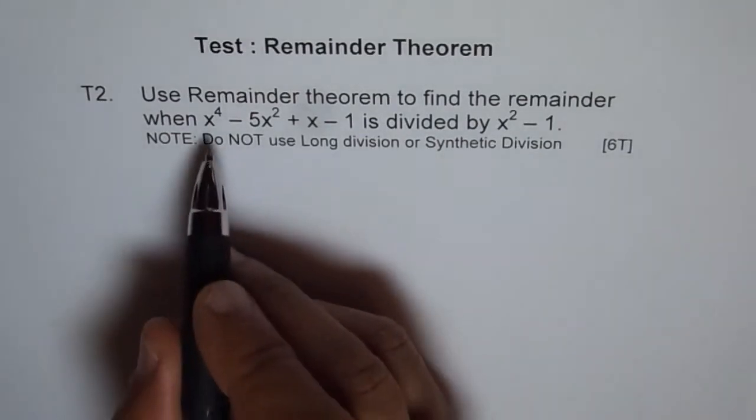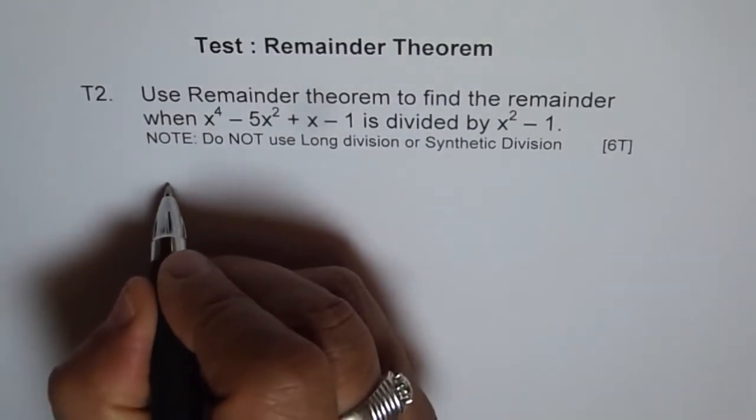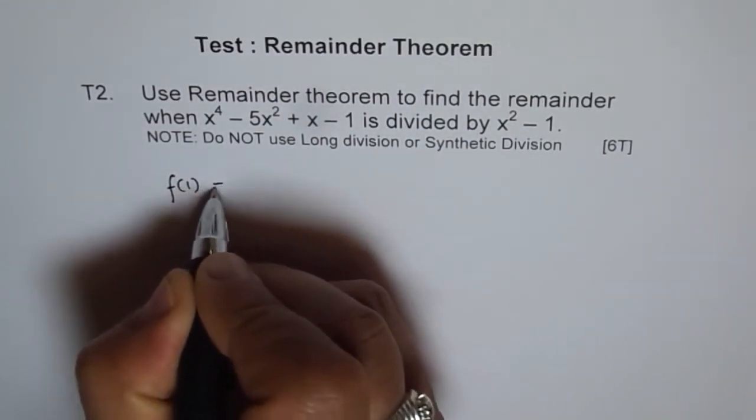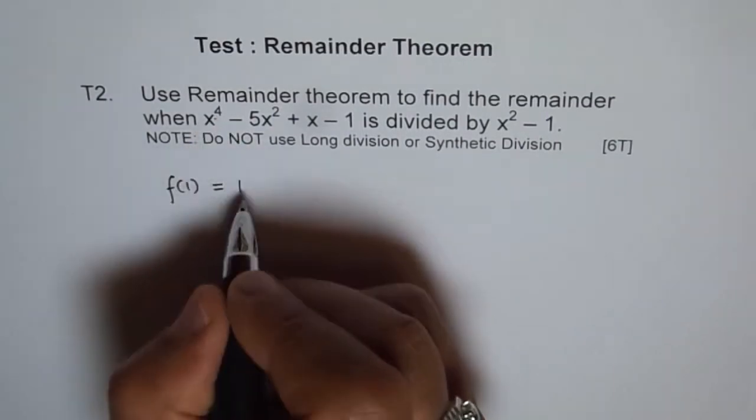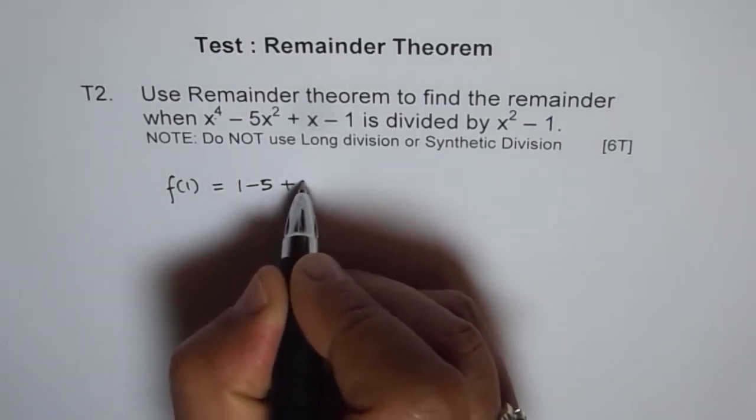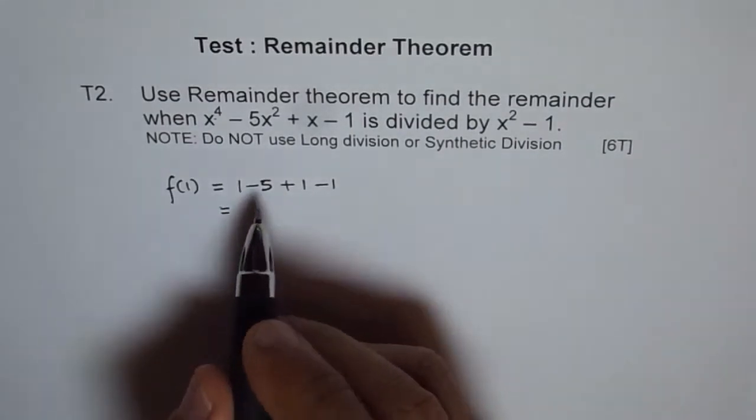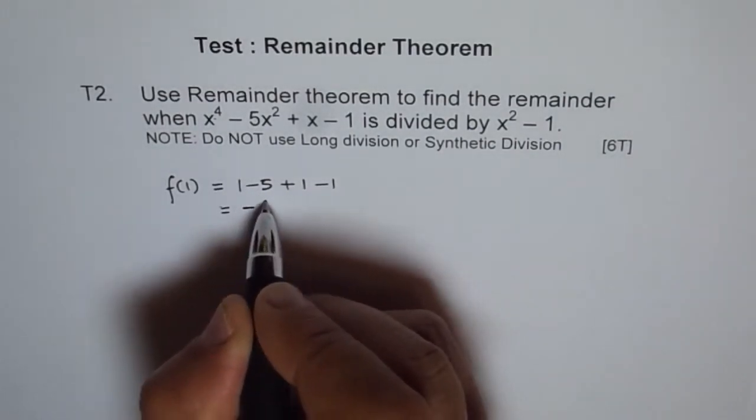Since we know x squared minus 1 is actually x plus 1 times x minus 1, let's try to find the values of this function at these points. What is f of 1? We put 1 here: 1 to the power of 4 minus 5 plus 1 minus 1. That gives us 1 minus 5 is minus 4, and these cancel to 0. So f(1) = -4.